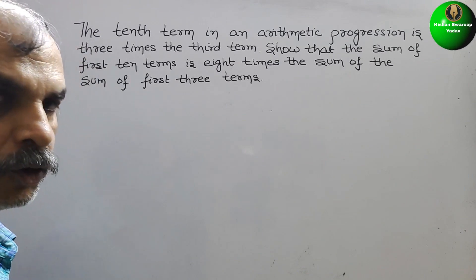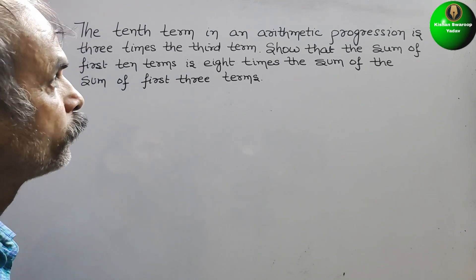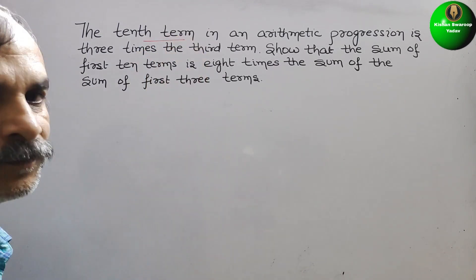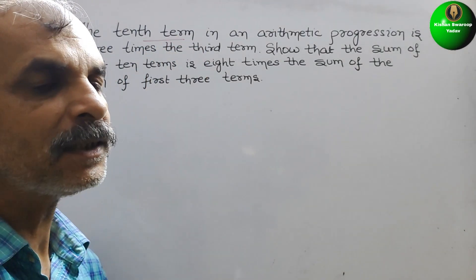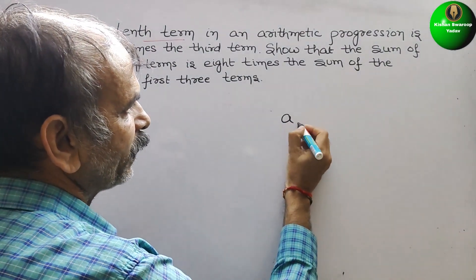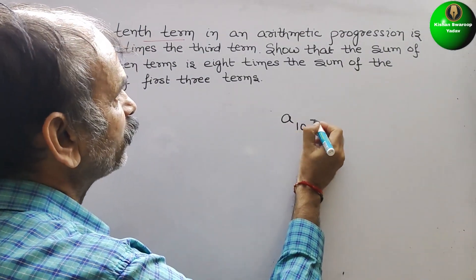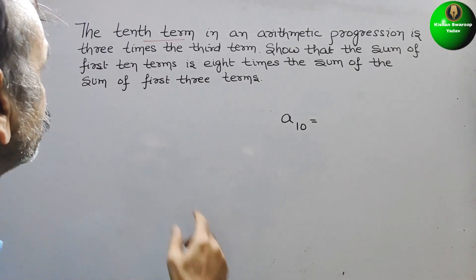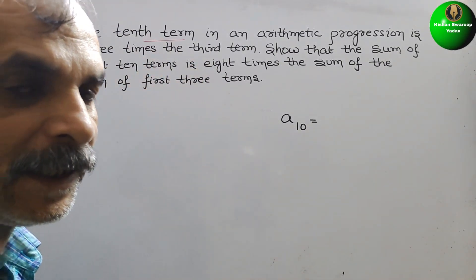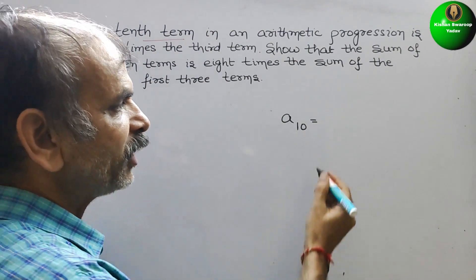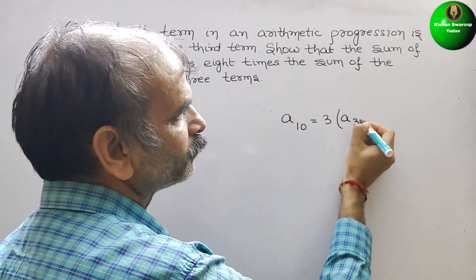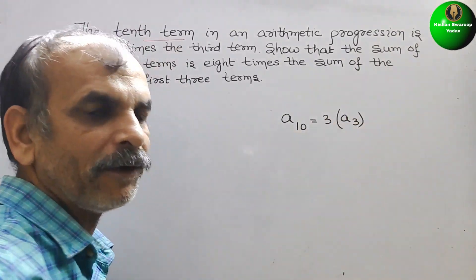Now, see what we have to do. What they have given? The 10th term, that means A10. So we will write here A10 that is equal to 3 times the third term, 3 into A3. They are given like this.